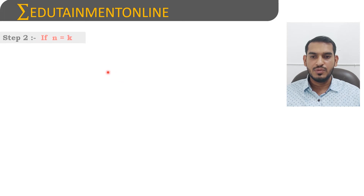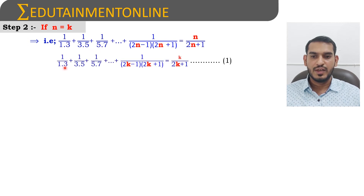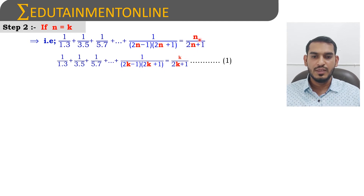Now let us assume that S(n) is true for n=k. So we write the given equation with n=k: 1/(1×3) + 1/(3×5) + 1/(5×7) + ... up to the kth term, which is 1/[(2k−1)(2k+1)], equals k/(2k+1).